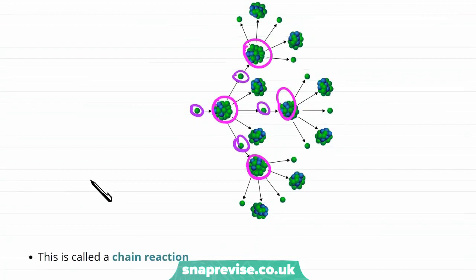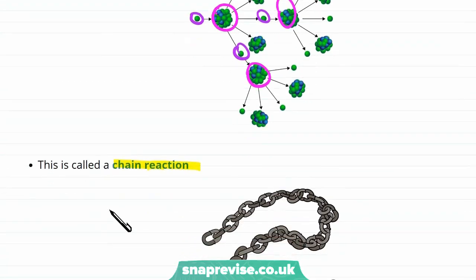We call this sort of reaction a chain reaction. We imagine the reactions like links in a chain. Each fission that occurs causes another fission to occur, which then causes another fission to occur. And this goes on forever as if we have a chain of reactions.